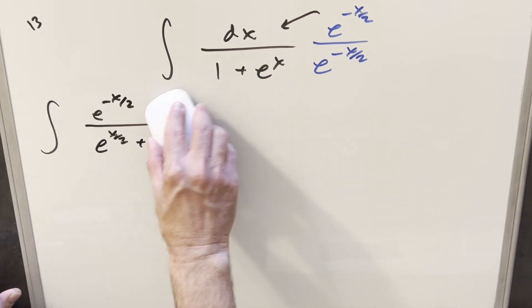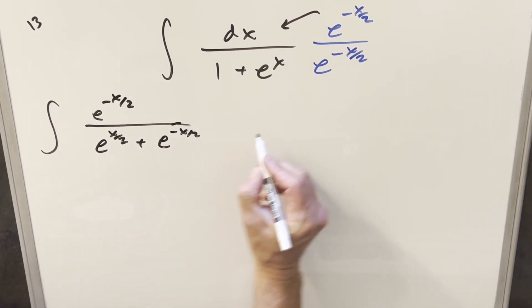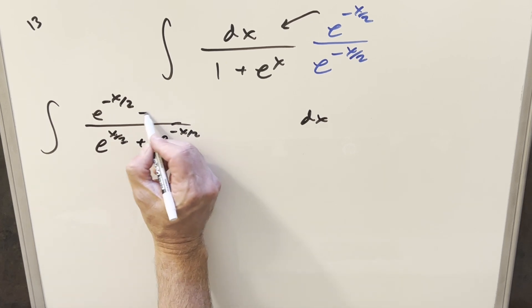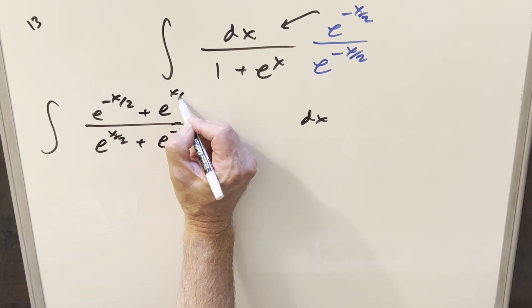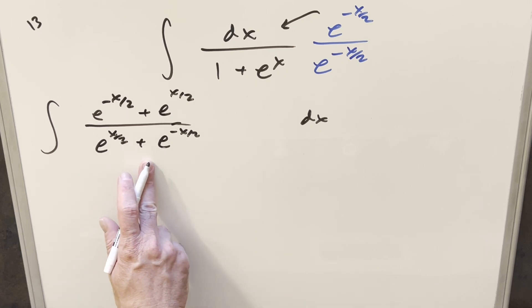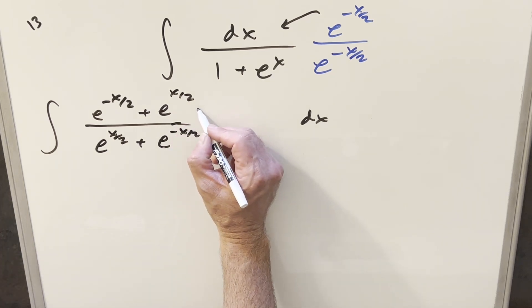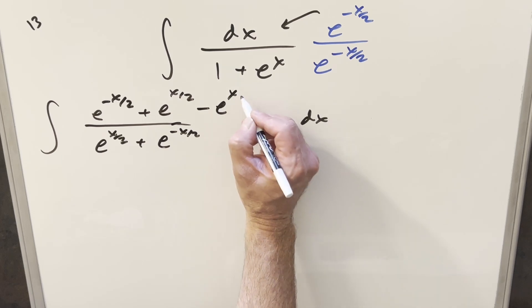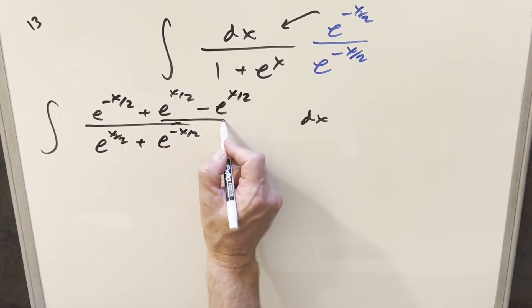So first, let's remove this dx just so that I can get some more space. Here, I'll put the dx way over here. So then first, what I'm going to do, if I just add e to the x over 2, then now the whole integral is 1. So that's going to be easy to deal with. But we changed it, of course. So let's not change it. Let's subtract off the same thing. So then here, we're just adding 0.